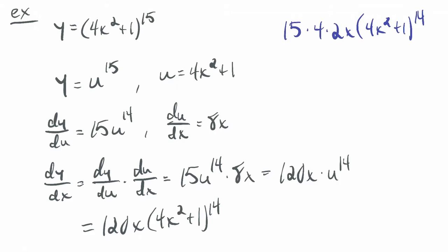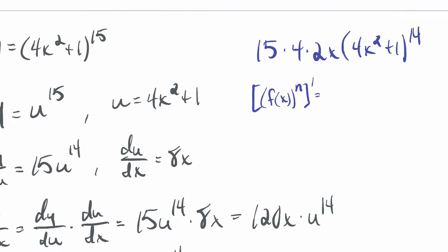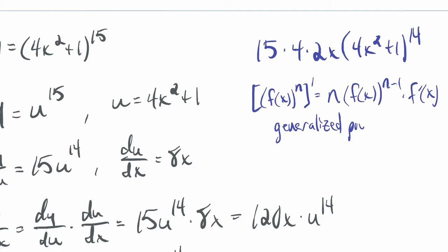A shortcut called the generalized power rule: the derivative of f(x) to the n is n times f(x) to the (n minus 1) times f prime of x. This combines the power rule and the chain rule in one step.